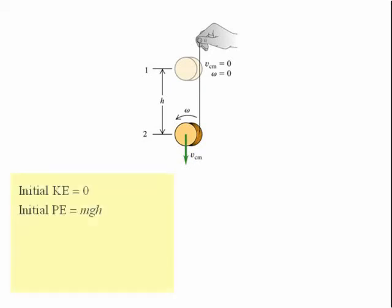The initial kinetic energy of our yoyo is zero and its initial potential energy is equal to the mass of the yoyo m times g times h, where we are taking the final height of the yoyo to be the zero potential energy position.